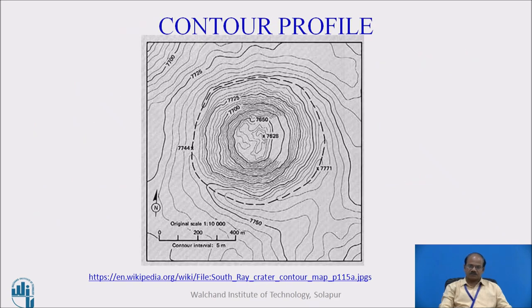To begin with, we will see what is a contour profile. A contour profile is normally a profile of the land surface corresponding to a selected alignment, which is taken up on a contour map. Here, for example, I have taken a contour map in which you can see there is a mention of contour interval of 5 meter, a mention of scale graphically as well as numerically, and the map is showing the values of the contour RLs at every 25 meter interval. Between every two successive contours, vertical distance is 5 meter.